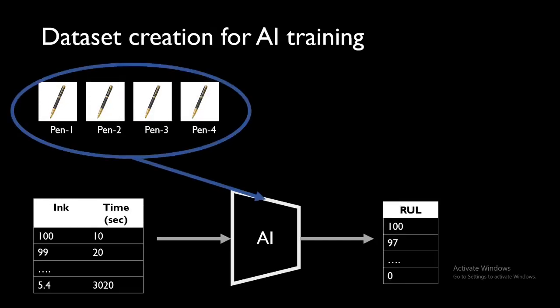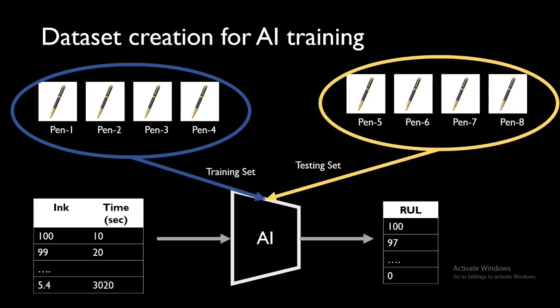In the next step we can see that we have certain pens in our entire dataset as training set and the rest of the historical data of pens as test set to validate how our AI performs.